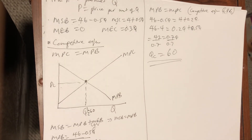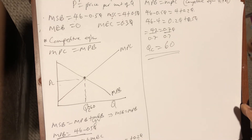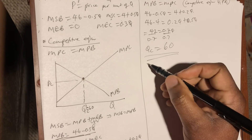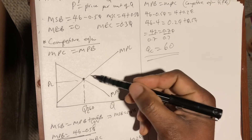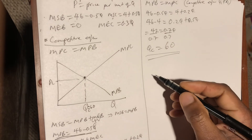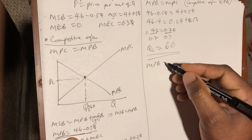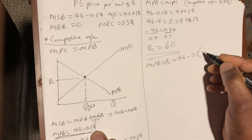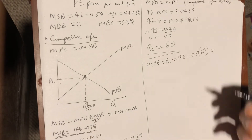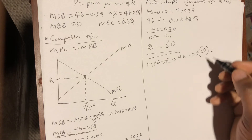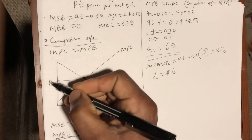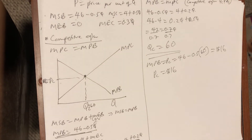Now it's easy to find the competitive equilibrium price Pc. You can use either the MPB or the MPC equation, since at that point they are equal. Using the MPB equation with Q = 60: Pc = 46 − 0.5(60) = 46 − 30 = 16. So Pc = $16.